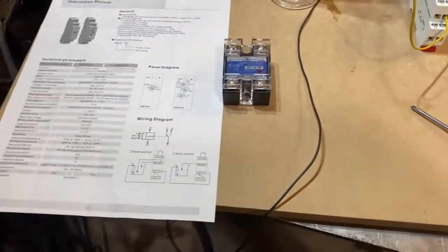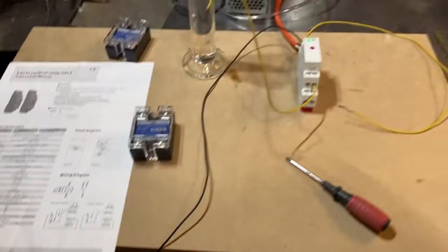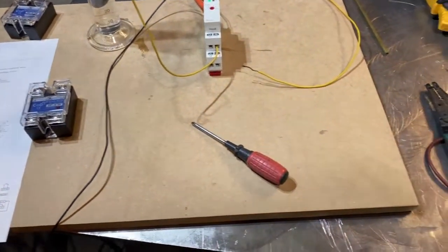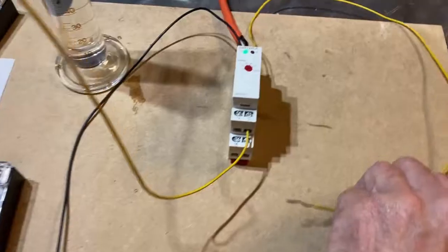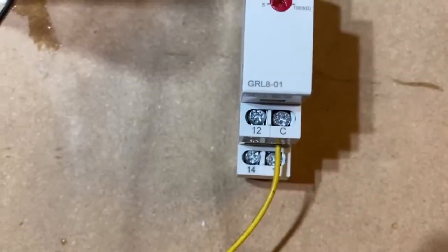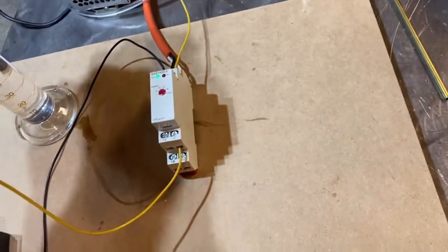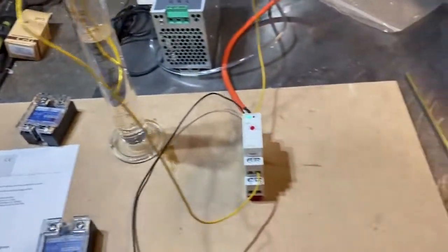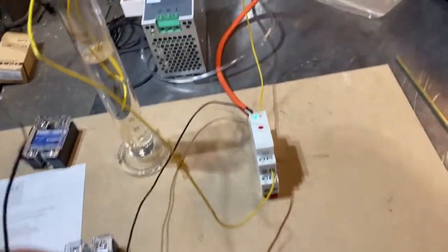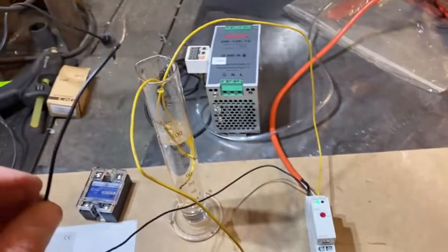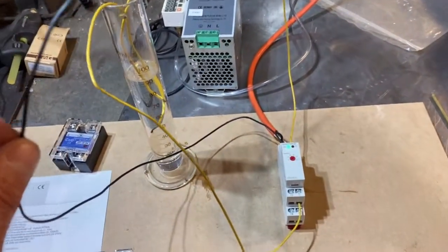Essentially, what you need to do to get it to work is you have to have both the minimum and the common submerged in the water. I'm just doing a test to get the thing proofed out. And then in order to get the relay to fire, you have to submerge the maximum.